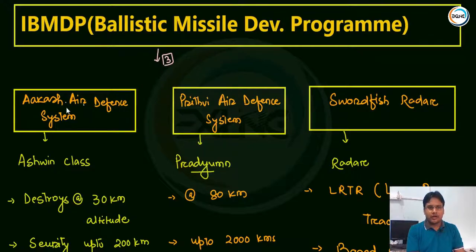The three components of the Integrated Ballistic Missile Development Program are: first, Akash Air Defense System; second, Prithvi Air Defense System; and third, Swordfish radar.